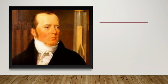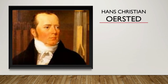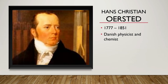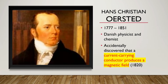Our last scientist in this lesson is Hans Christian Ørsted, who was born in the year 1777 and died in the year 1851. A Danish physicist and chemist, he was able to show how a current-carrying wire behaves like a magnet, because he was the one who accidentally discovered that a current-carrying wire or conductor produces a magnetic field.